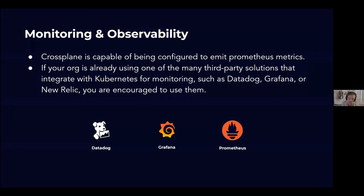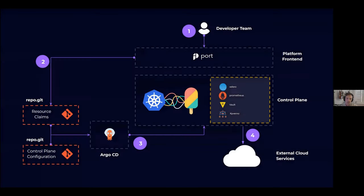Monitoring and observability is also important as we think about running Crossplane in production. Crossplane is able to emit Prometheus metrics — you just have to enable it when you install Crossplane. Once enabled, you can use any observability solution you're already using today to process those metrics and render dashboards. So to recap the final baseline architecture: it's got a Port front end, Flux driving the configuration, and our control plane going to create a GKE cluster on GCP — this is our developer self-service platform.